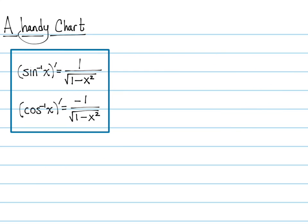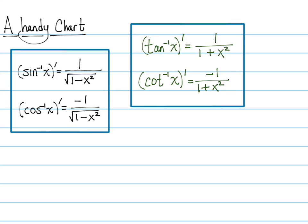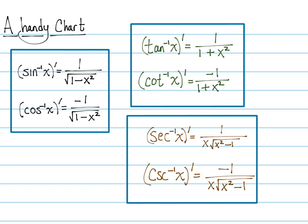Here's a chart to help you remember all the derivatives. Arc sine and arc cosine are the same except the co has a negative. Arc tangent and arc cotangent are the same except the co has a negative. Arc secant and arc cosecant are the same except arc cosecant has the negative. So all the co-functions are negative. Practice taking some derivatives of the inverse trig functions, and I'll see you next video.